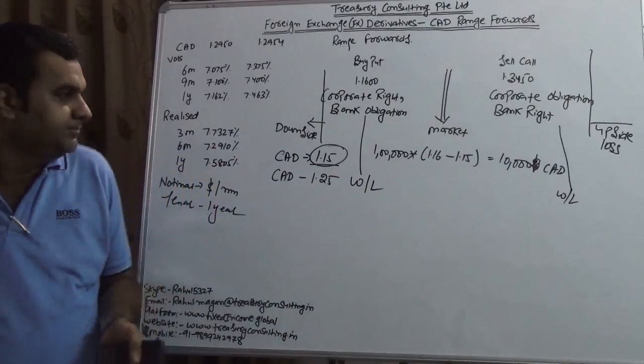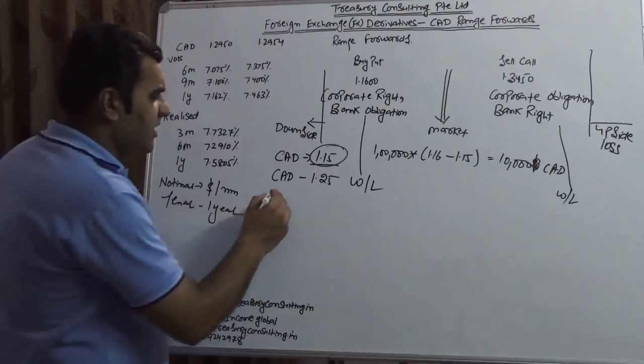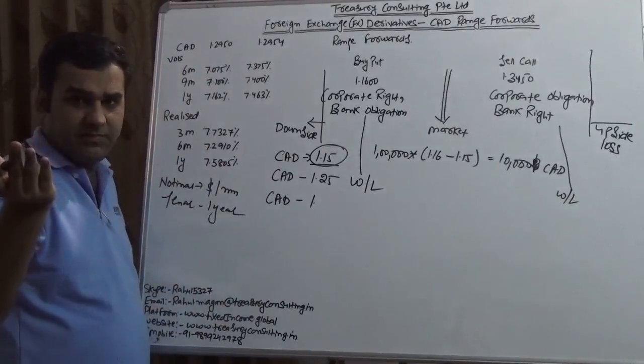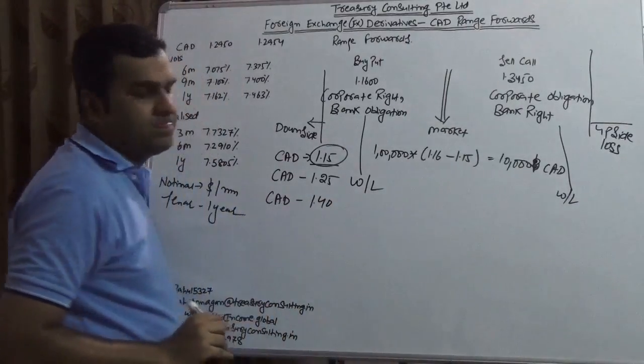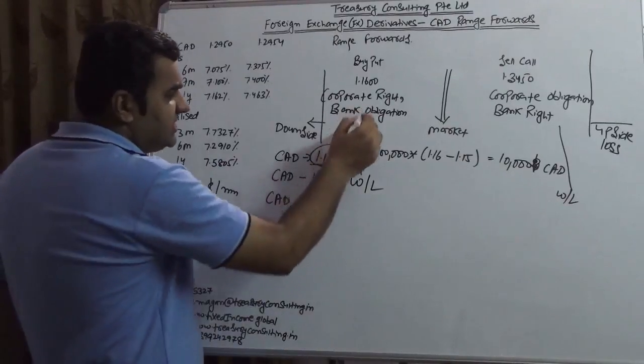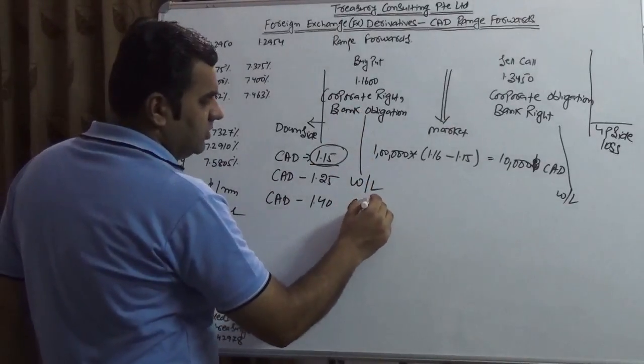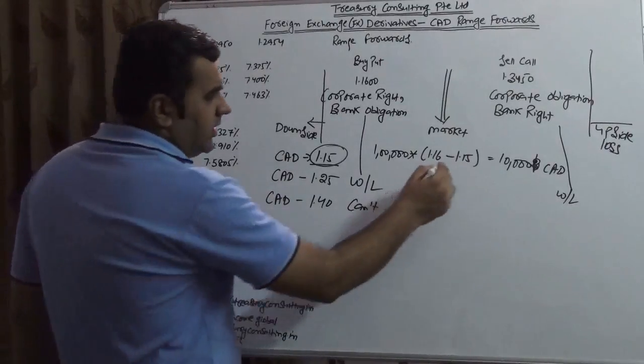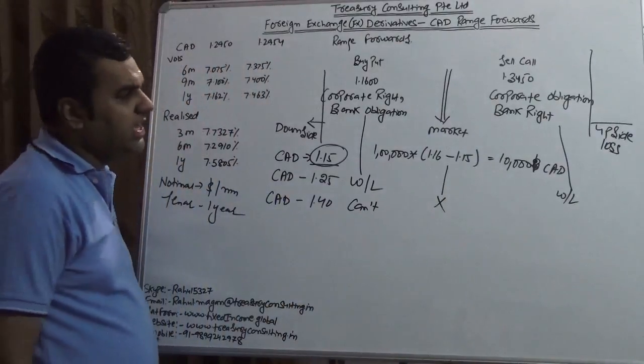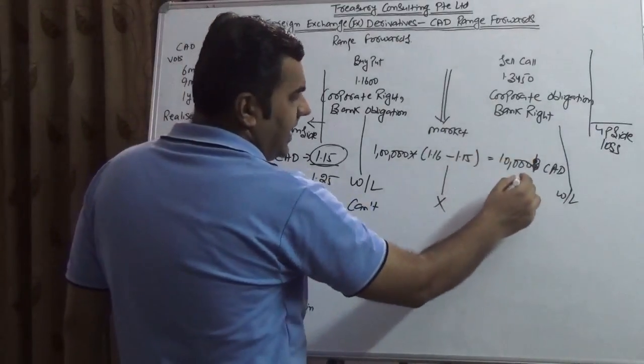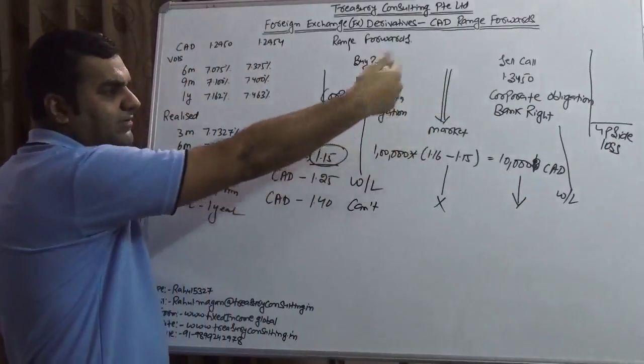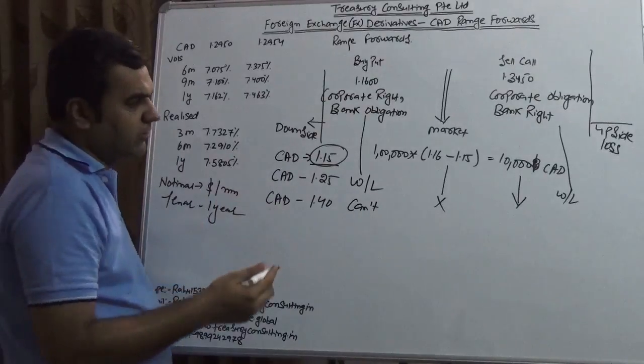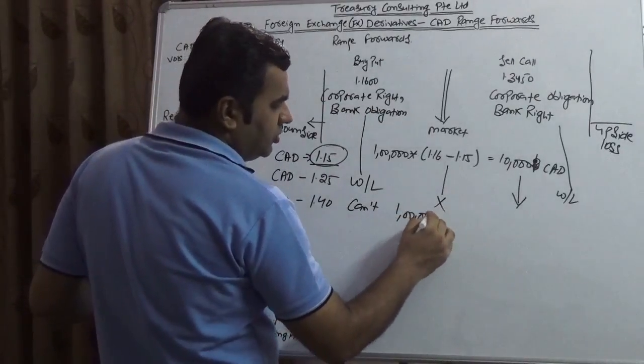Third is, assuming the CAD will go to, assuming it will even cross Morgan's prediction and it will go to 1.4. Then what would happen? He cannot do this because he is not going to sell in the market for sure. He cannot do this. And here he would end up when the bank will buy from him, because here the corporate has an obligation and the bank is having a right. Here the bank will buy from him at 1.3450.